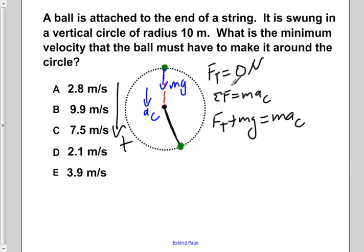We've already established that the tension in our string has to be equal to zero, so we can ignore that. This then leaves us with mg is equal to ma centripetal. Now we can divide both sides by m, canceling out the mass in each side, leaving us with g is equal to a centripetal acceleration.